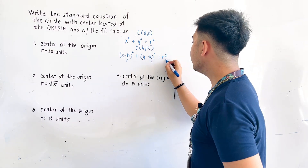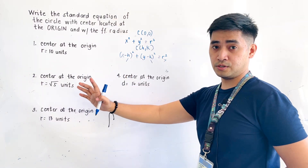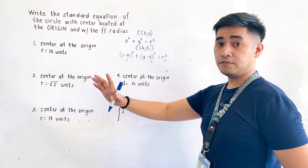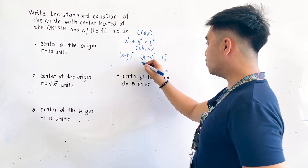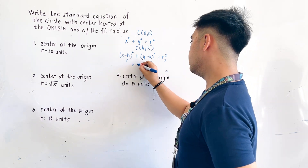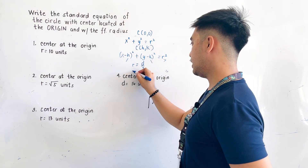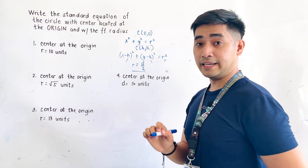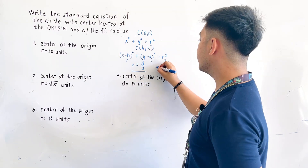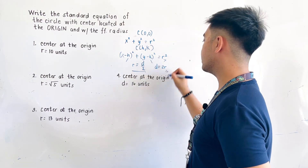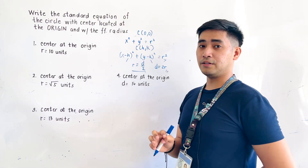Always remember that the radius must be the given radius of the problem. If a diameter is given, we have to know that radius is half of the diameter, or the diameter is twice the radius. That is the relationship between the radius and the diameter.